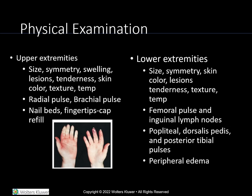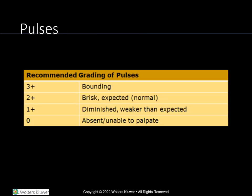In both the upper and lower extremities, while you have different pulses to assess, you are still looking for the same attributes such as size, symmetry, swelling, lesions like blisters, scars or moles, pigmentation, tenderness, skin color, texture, temperature, nail beds, capillary refill, and edema. This is the chart for the recommended grading of pulses, with zero being absent or unable to palpate, up to 3+, which is bounding.